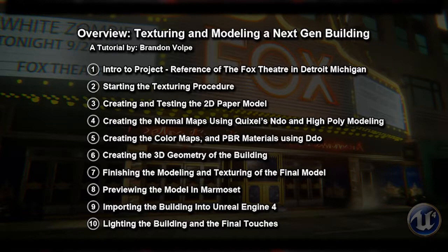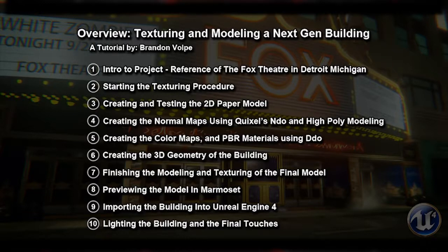The fifth lesson will be creating color maps and physically-based rendering materials using DDU, and then we'll be creating low-poly geometry. In the seventh lesson, we're going to be finishing the modeling and texturing of the final model. In the eighth lesson, we'll be previewing the model in Marmoset.